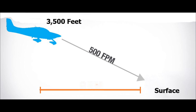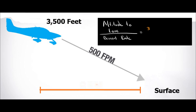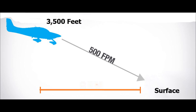In today's example, our airplane will be at 3,500 feet and will be making a descent to the surface. Therefore, using the values presented above, if we divide the altitude to lose by the descent rate we want to use, we will know how much time it will take us to descend. In today's example, the answer will be 7 minutes.